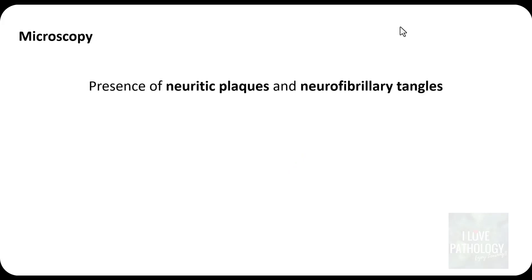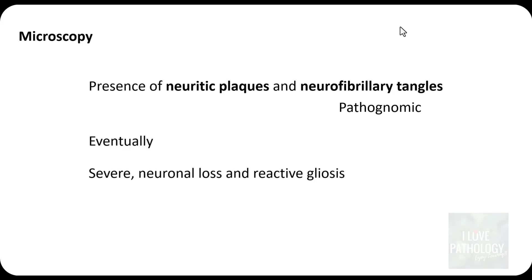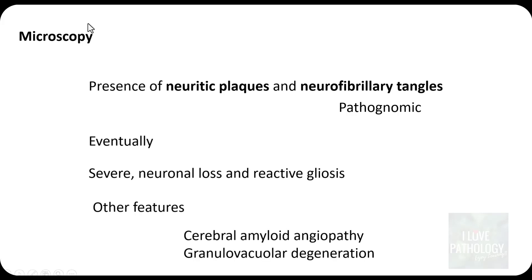Coming to the microscopic features of Alzheimer's disease: it is the presence of neuritic plaques or amyloid plaques and neurofibrillary tangles which are the characteristic, pathognomonic features. Eventually there will be severe neuronal loss and reactive gliosis. There can also be secondary features which include cerebral amyloid angiopathy and granulovacuolar degeneration.